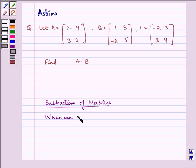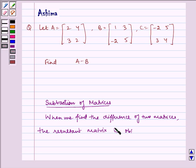When we find the difference of two matrices, the resultant matrix is obtained by adding negative of second matrix to first matrix.